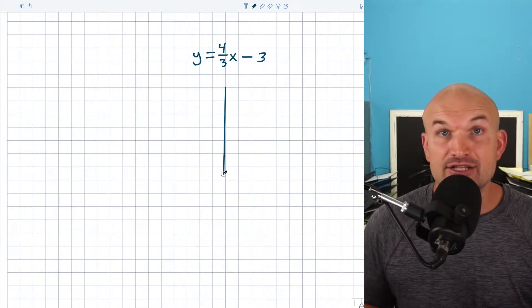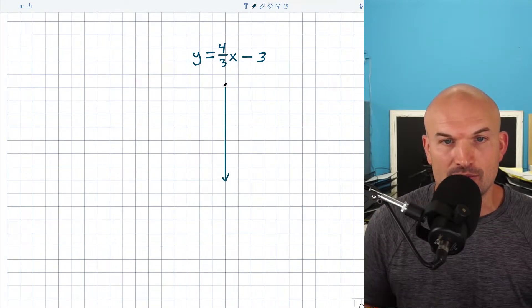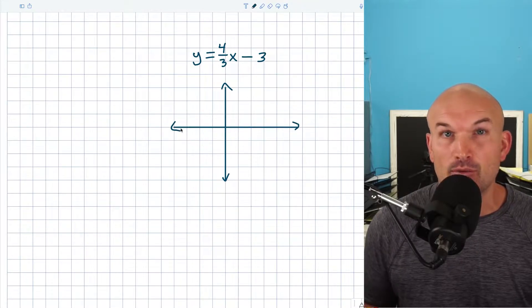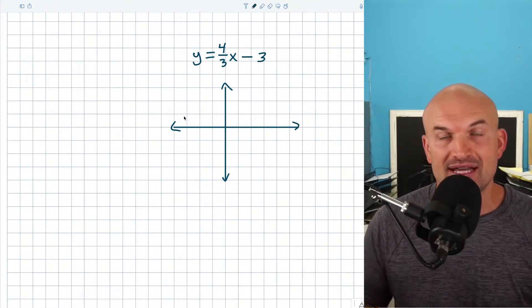However, since this is in slope-intercept form, I do want to make sure we agree on a couple points. So what I'm going to do is I'm just going to quickly graph this using my slope-intercept method. So therefore, we can kind of confirm what exactly the y-intercept is, as well as the x-intercept.